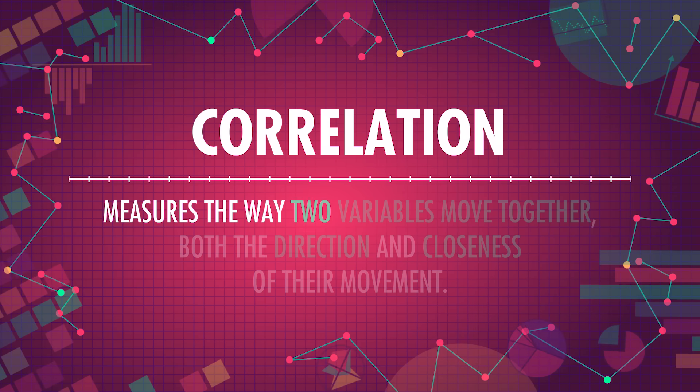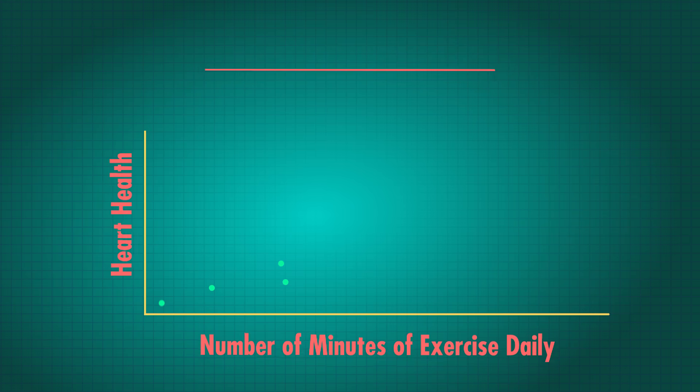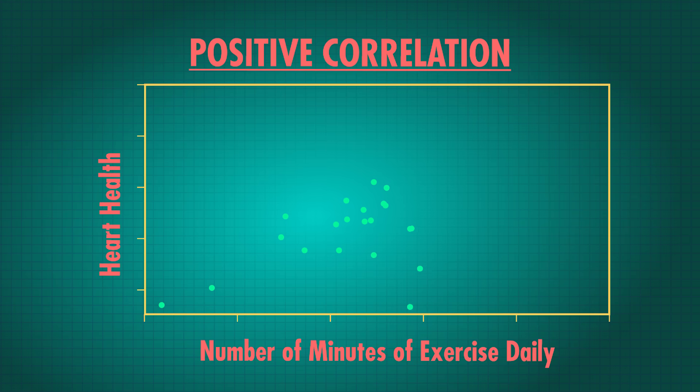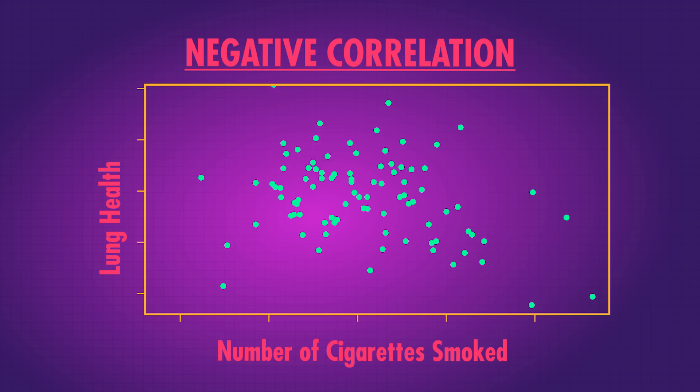Correlation measures the way two variables move together, both the direction and closeness of their movement. You may have read articles that claim there's a positive correlation between exercise and heart health — that just means if you exercise more, your heart tends to be healthier. A positive correlation looks something like this on a scatter plot, while a negative one, like the correlation between the number of cigarettes smoked each day and lung health, might look like this — higher values of cigarettes smoked tend to have lower values for lung health.